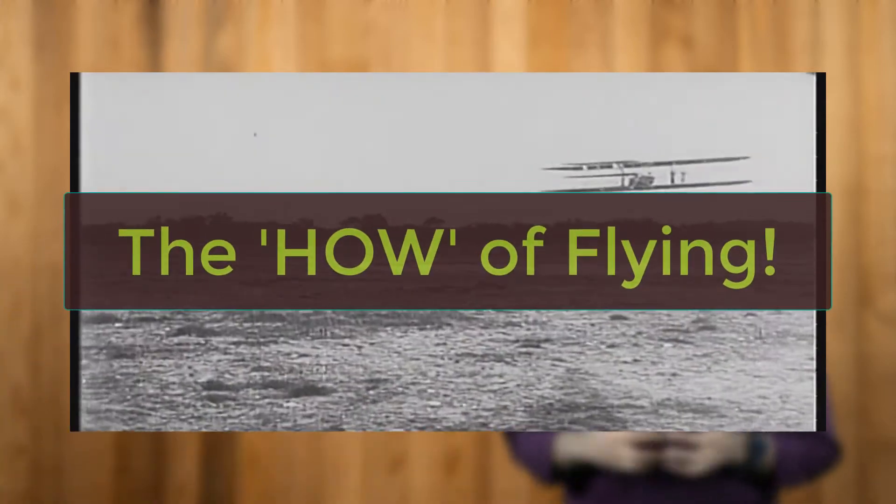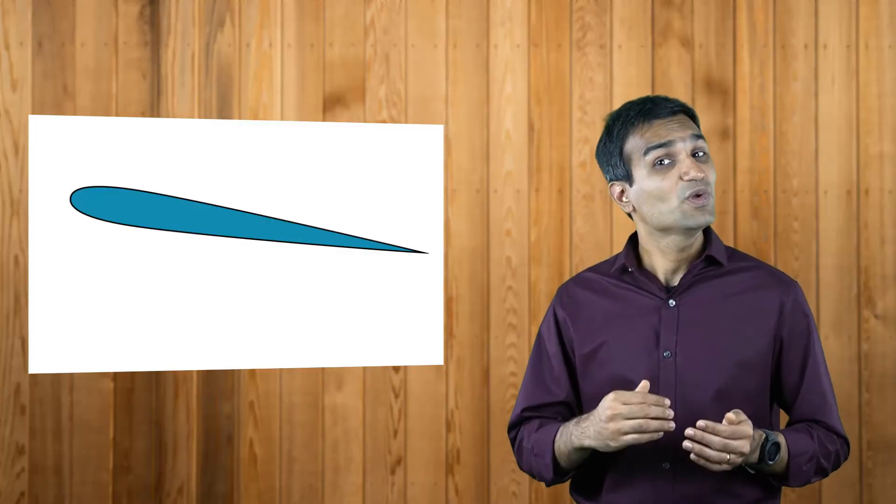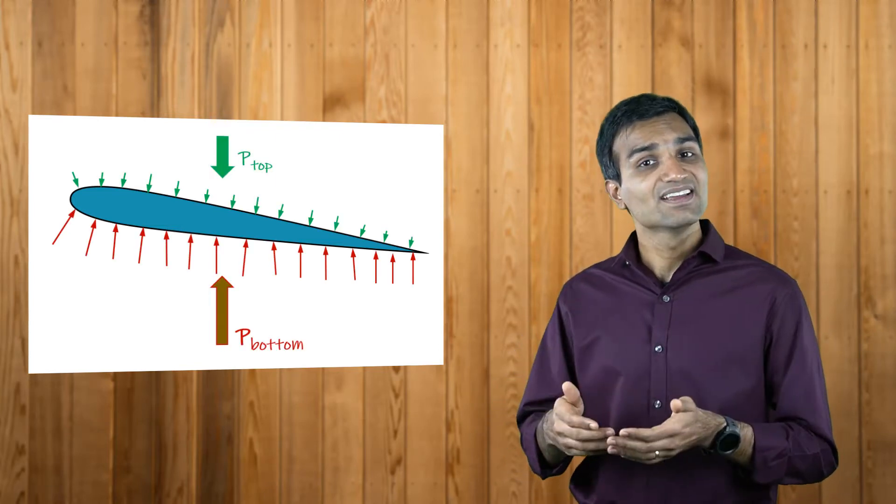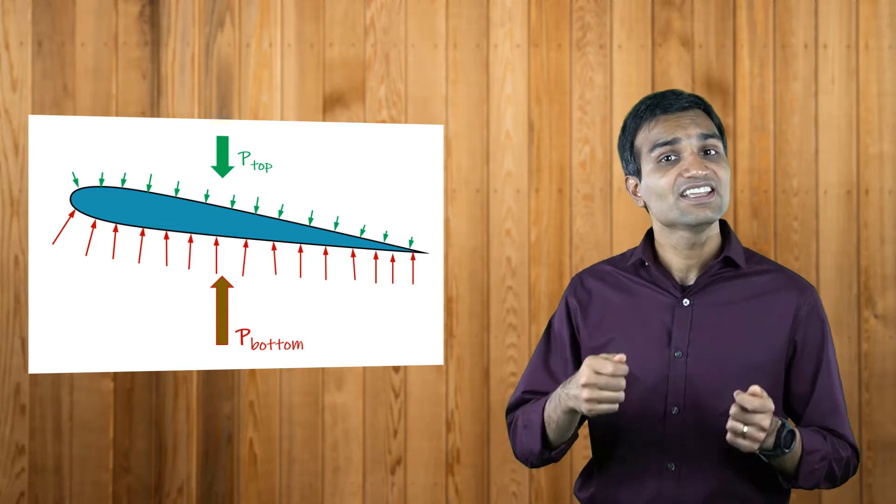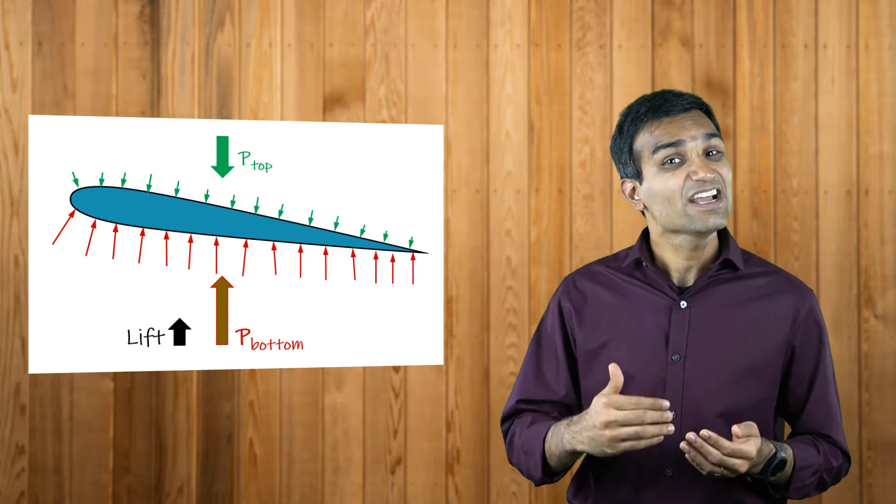In this lesson, we will learn the how of flying. The difference in pressure distribution between the top and bottom surfaces of an airplane wing is responsible for generating the necessary upward or downward force during takeoff or landing. This force which is perpendicular to the freestream motion of the fluid is called the lift force.